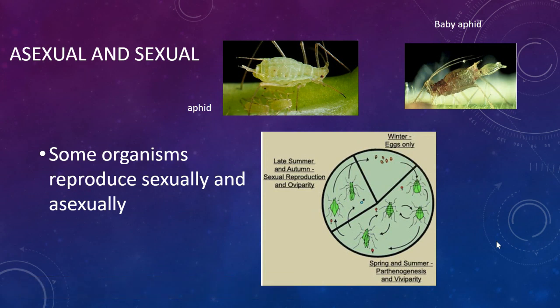Some organisms, like many insects, reproduce sometimes asexually and sometimes sexually. Sometimes, if an organism is experiencing environmental change, it will choose to reproduce sexually in order to give offspring a better chance of survival, because sexual reproduction creates more diversity. There's a better chance an offspring will survive and reproduce if they're not exactly like the parent.